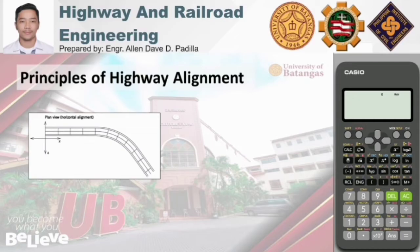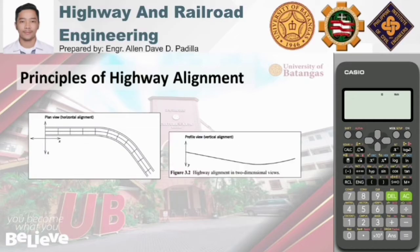As a consequence, the three-dimensional highway alignment problem is reduced into two two-dimensional alignment problems: the horizontal alignment and the vertical alignment. In this video, we will focus on the vertical alignment.